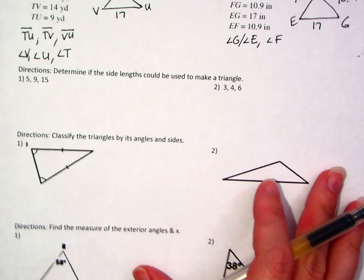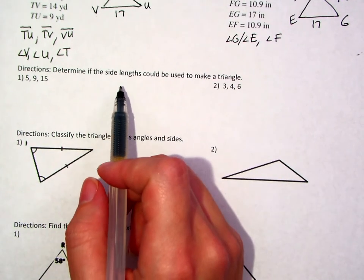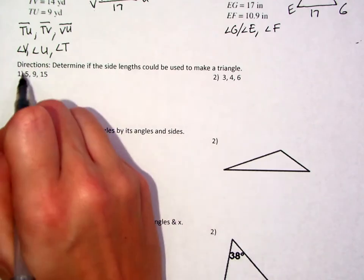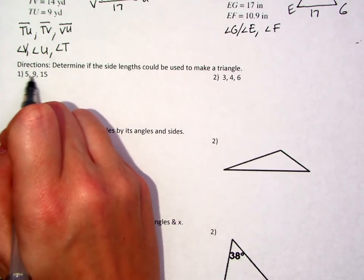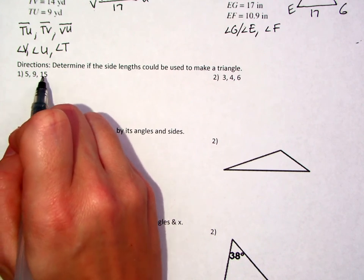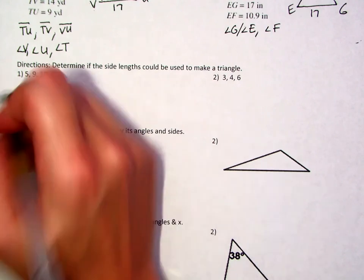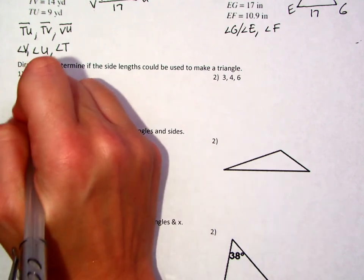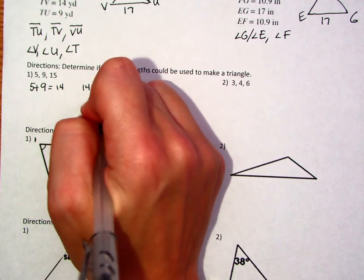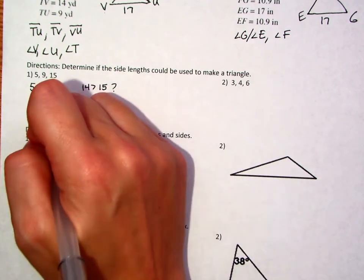Now, moving on to the next set of questions, it says that we're supposed to determine if the side lengths could be used to make a triangle. Well, what you should know is that you should be able to add two sides together, and their sum would be greater than the other side. And if it does, for each case, then you know for a fact it's going to make a triangle. So for example, 5 plus 9 is 14. Is 14 greater than 15? No way. So this would not actually make a triangle.